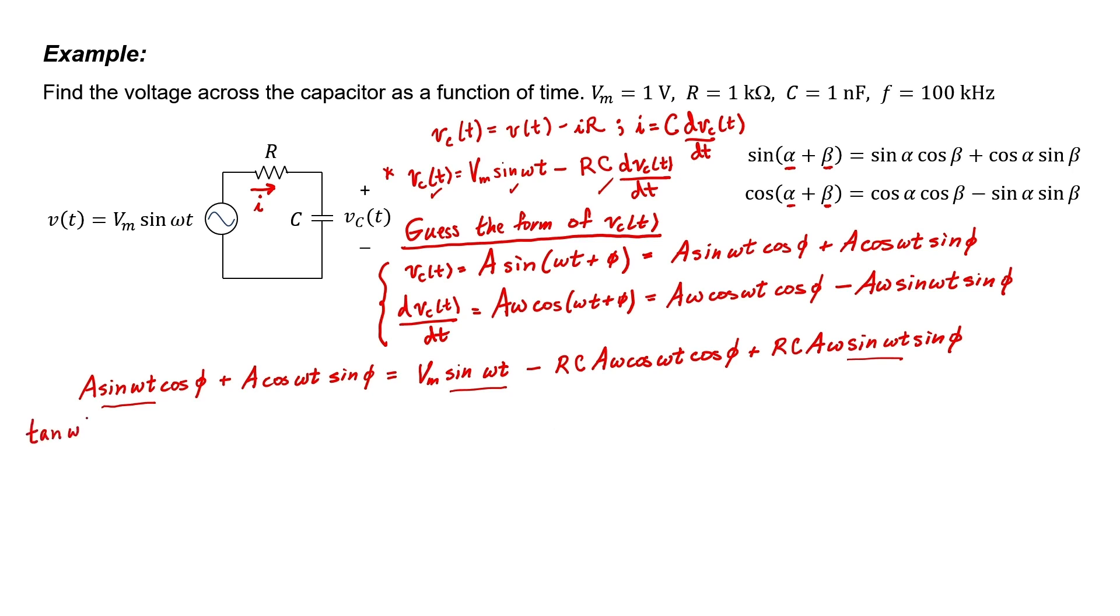Let's group those terms together first. For the first term, we're left with A times the cosine of phi. For the second term, we're just left with Vm. And for the third term, we're left with RCA omega sine phi. Let's put the other two terms on the right side of the equation. The cosine will be canceled, so with the first term we're just left with A sine phi.